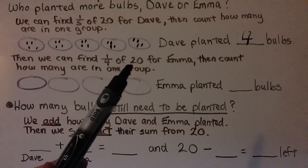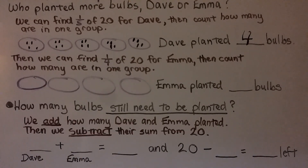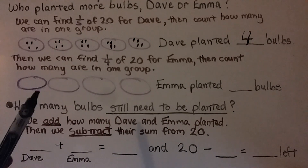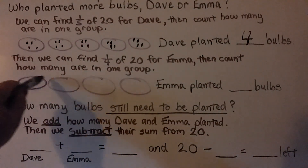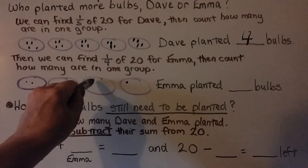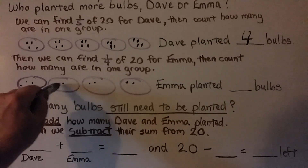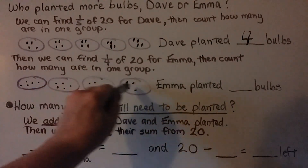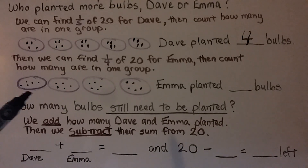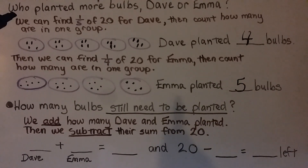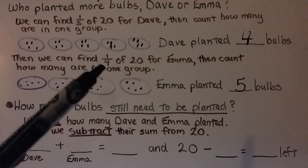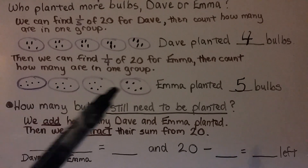Then we can find one fourth of twenty for Emma. Because it's fourth, we have a four for the denominator, which means we're going to have four groups. We keep going one at a time until we get to twenty: one through twenty. We can see in one group there are five, so Emma planted five bulbs. Emma planted one more — she planted five and he planted four. So this denominator was smaller and it made the number in each group more.